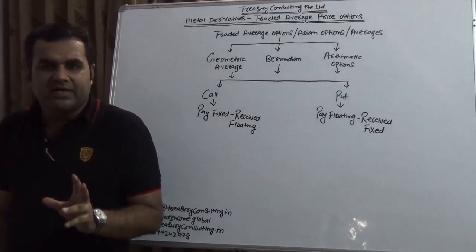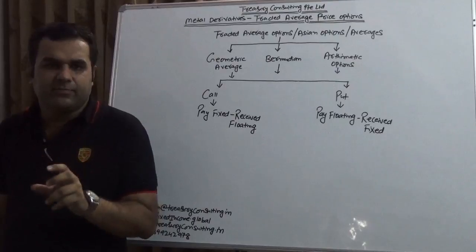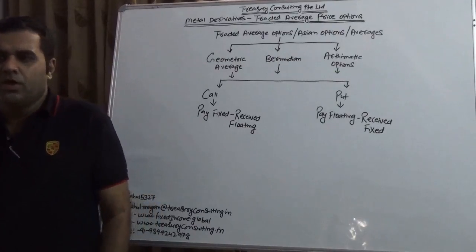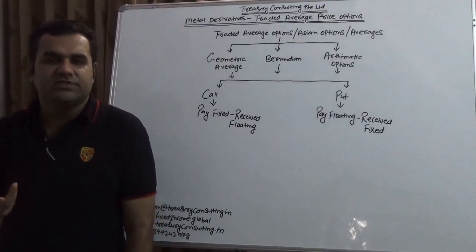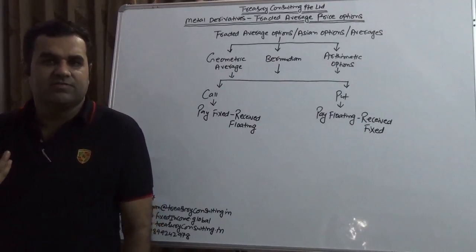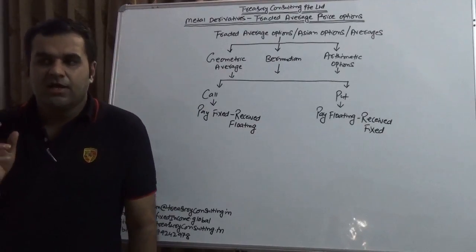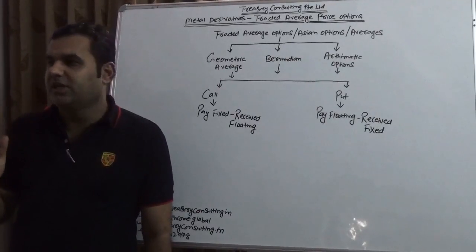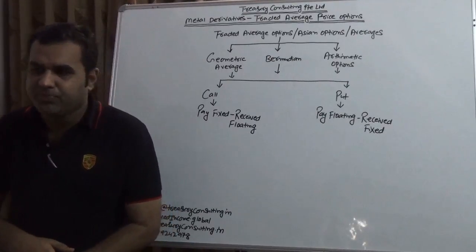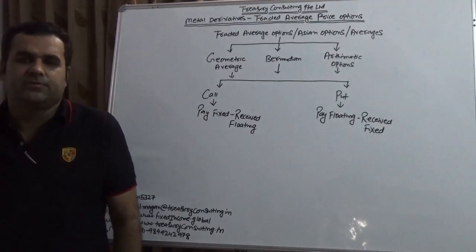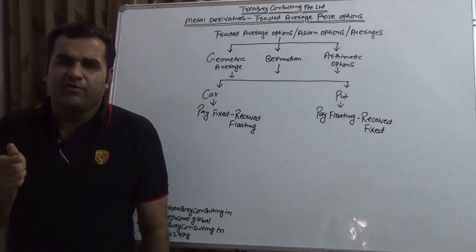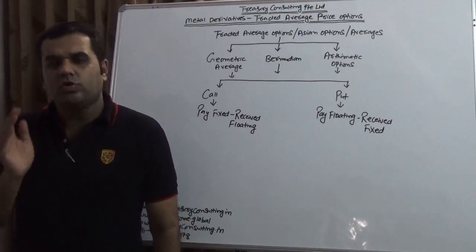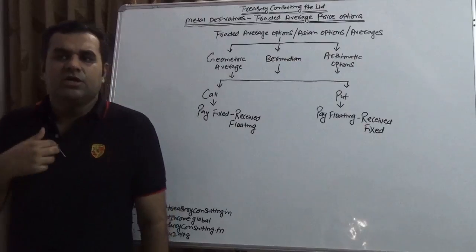Today we are launching our video on TAPO—traded average price option. If you open the internet and type TAPO, it's very confusing although it's pretty simple. This is a concept taken from foreign exchange. In foreign exchange we have predominantly two kinds of options: deliverable and non-deliverable. At some part of this taxonomy we have path dependency and non-path dependency.